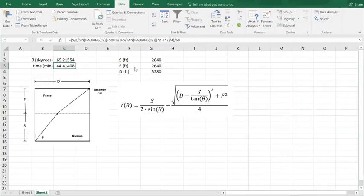So with these particular parameters the convict should choose an angle of 65 degrees to get through the swamp and the forest. And again the swamp he can travel 2 feet per second and in the forest he can travel 4 feet per second. And that's where we get the 2 and the 4 from.